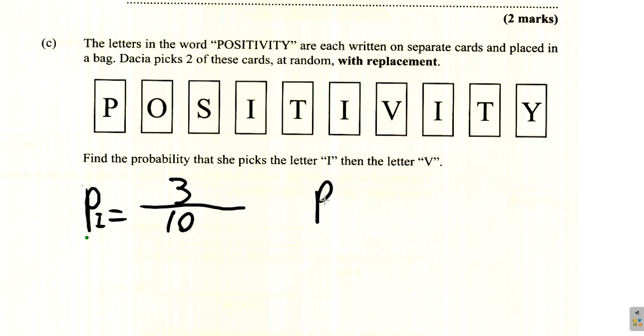Now, the probability of picking V. She replaces the I that she picks out. What's the probability of picking a V? There's only one V out of 10 letters.